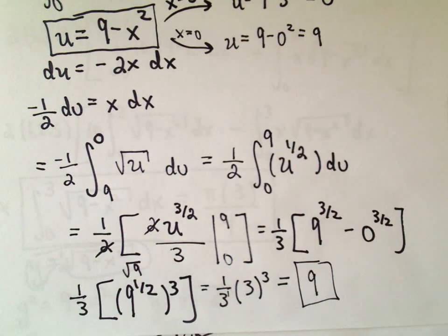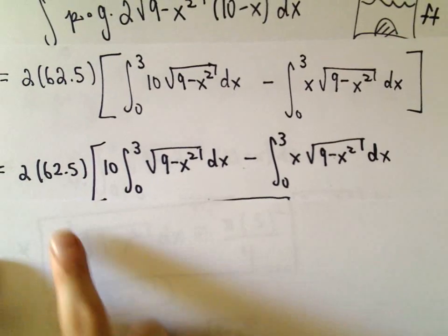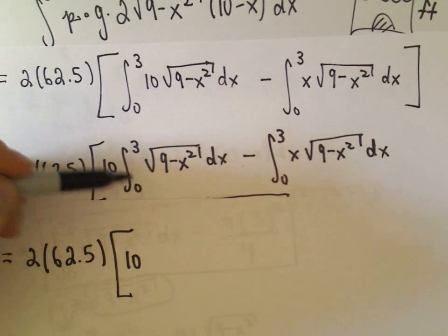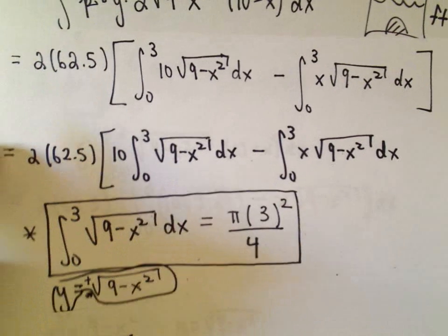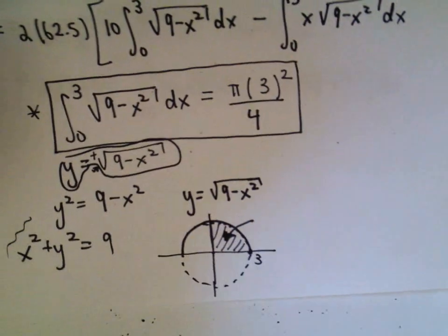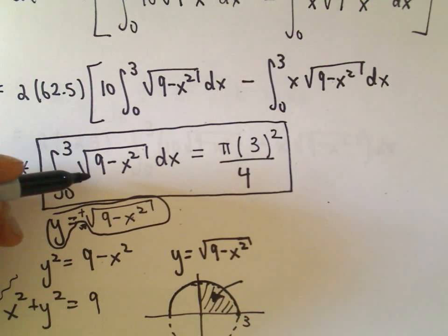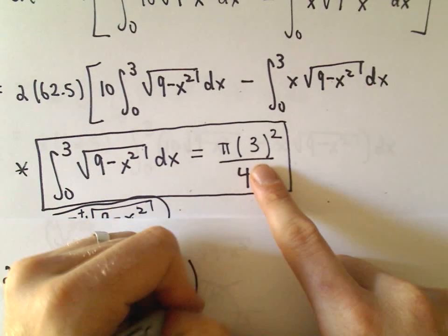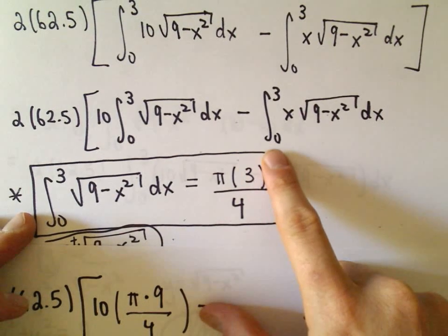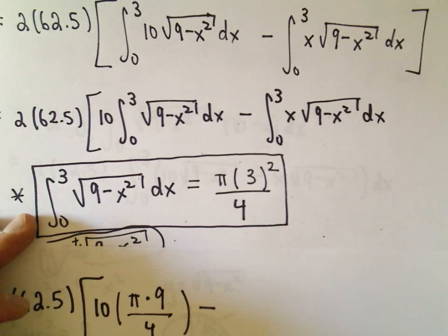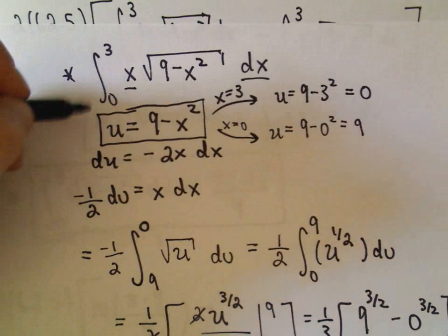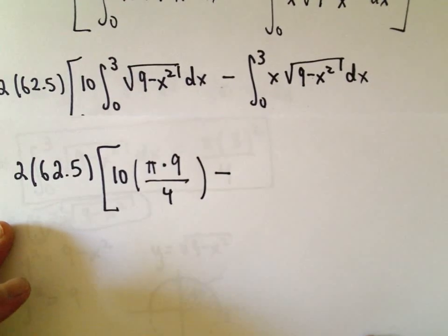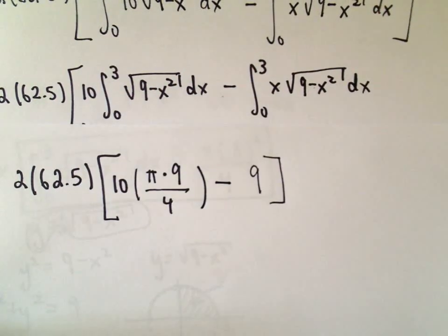Now we're in a good spot to plug everything in. We have 2 times 62.5, times 10 times the value of the integral from 0 to 3 of the square root of 9 minus x squared — which we evaluated geometrically as π times 9 over 4 — minus the integral from 0 to 3 of x times the square root of 9 minus x squared, which we computed as simply 9. All the integrals are gone now.